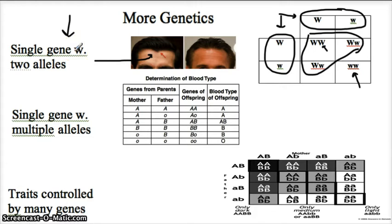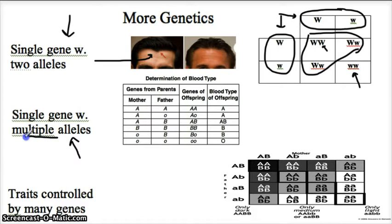Unfortunately, human beings are complex, and not everything is that simple. One example of that is a single gene with multiple alleles — not just the two normal alleles like we saw in Mendel's Punnett square.